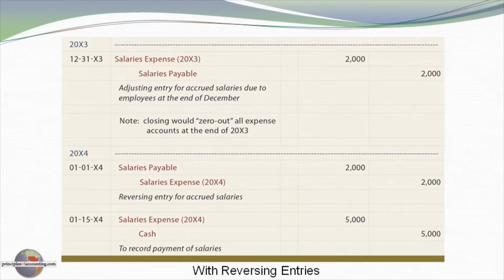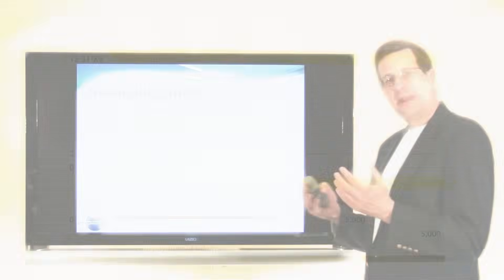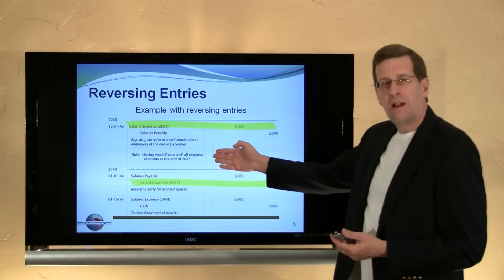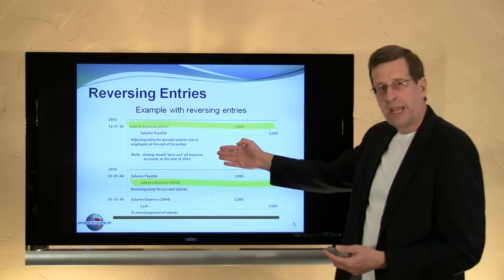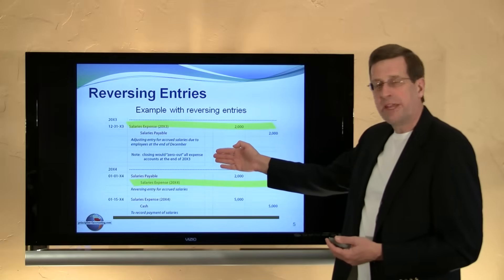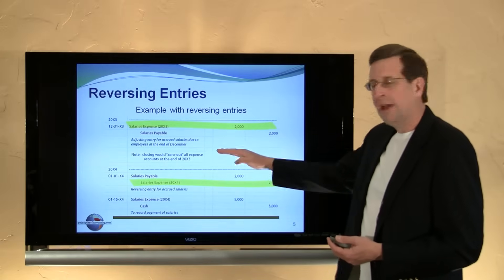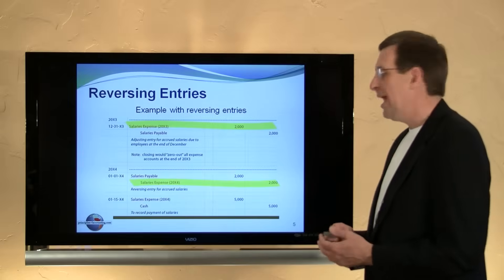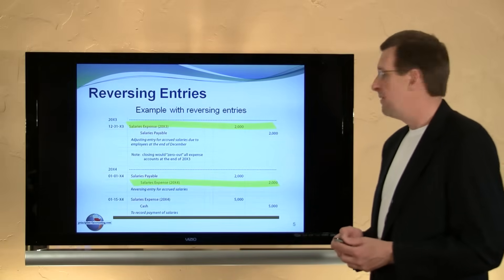Looking at this same example with reversing entries, the entry on December 31 is the same — we debit salary expense and credit salary payable. But we simply reverse that entry, exactly undo it, on the first day of the new year: debit salary payable and credit salary expense. Recall that at the end of the year, temporary accounts including salary expense are closed out. So this reversing entry recorded on the first day of the new year sets the salary expense into an abnormal credit balance — a negative balance of $2,000.